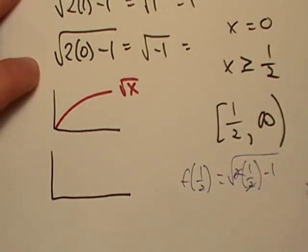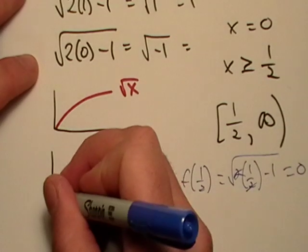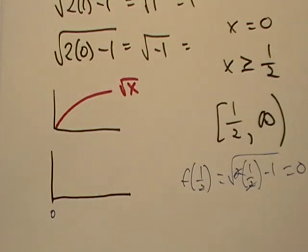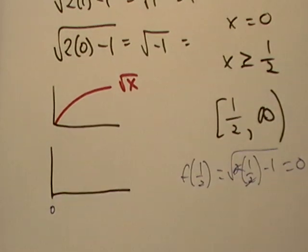F of 1/2 is 2 times 1/2 minus 1. Well that's just, boom, that just equals 0, doesn't it? So it looks like our starting point is 0.